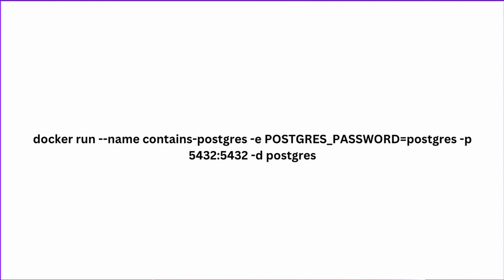The next thing we use is `-p` to define the port. There are two numbers: the first port is the one exposed on our end — that's how we're going to connect to Postgres, using port 5432. The second part is the port exposed inside of the Docker container, which is also running on 5432. You can change these to different ports that aren't being used, but I'm using 5432 on both the host and container side. It just makes it easy to remember, as long as the port isn't already in use.